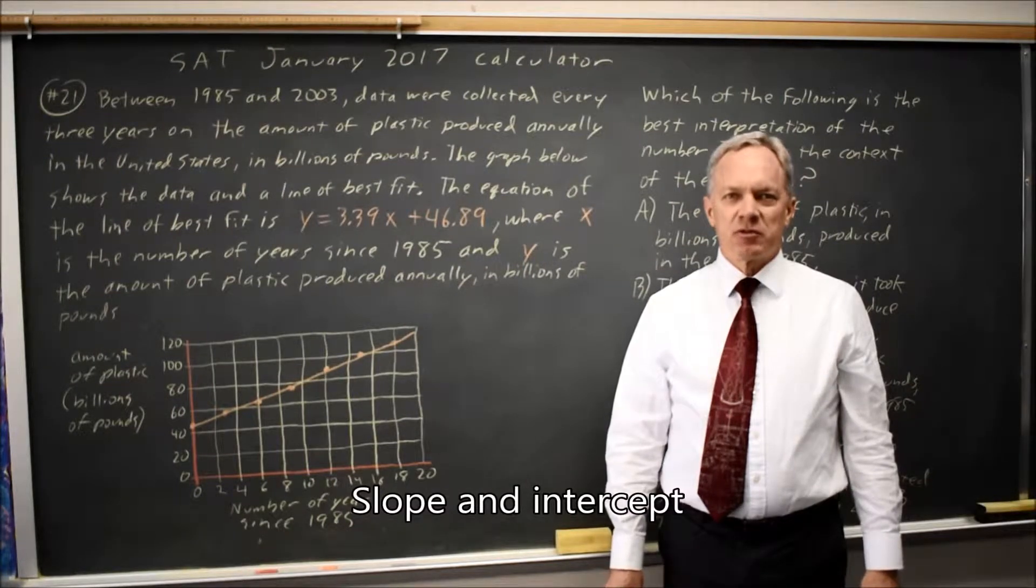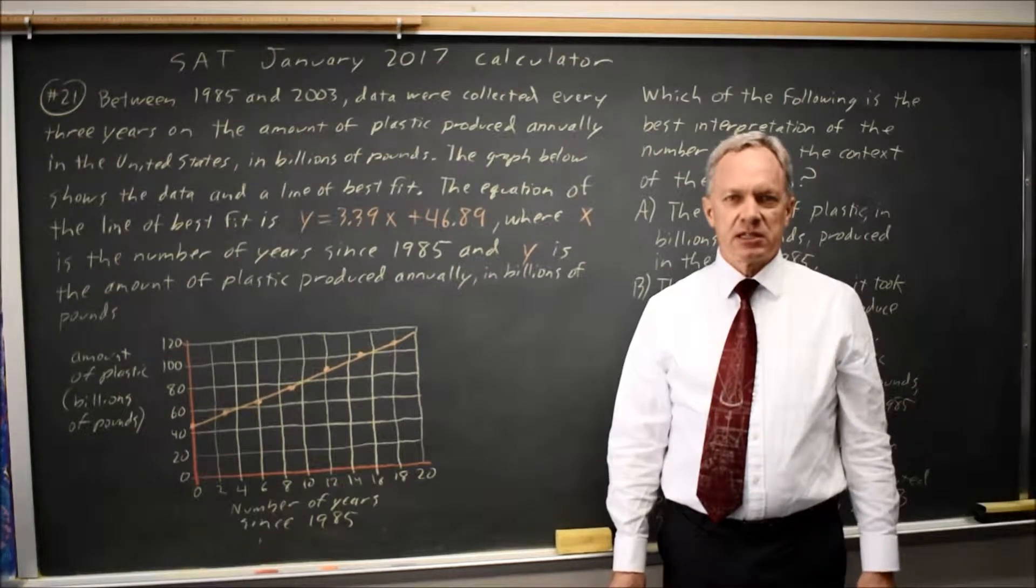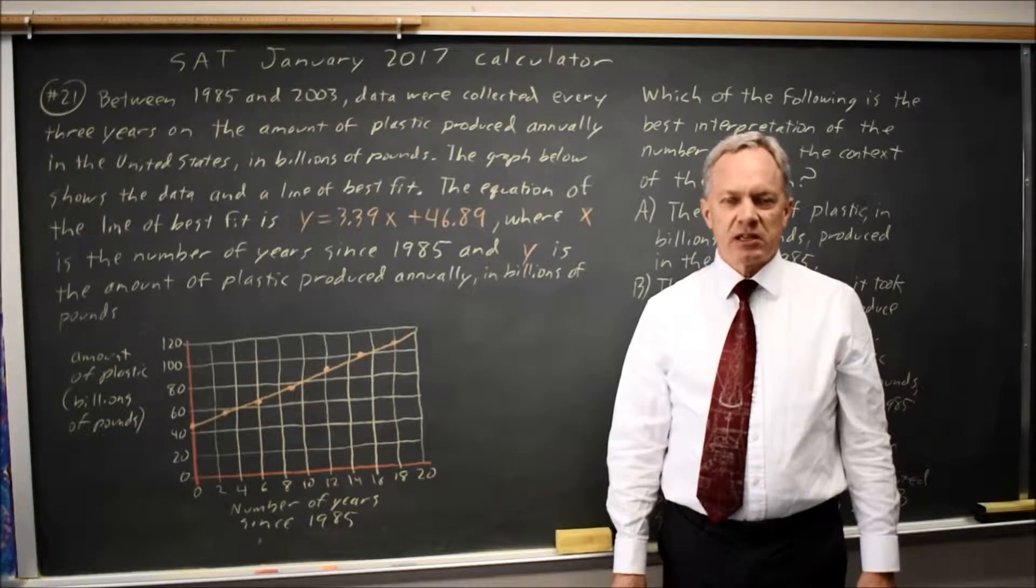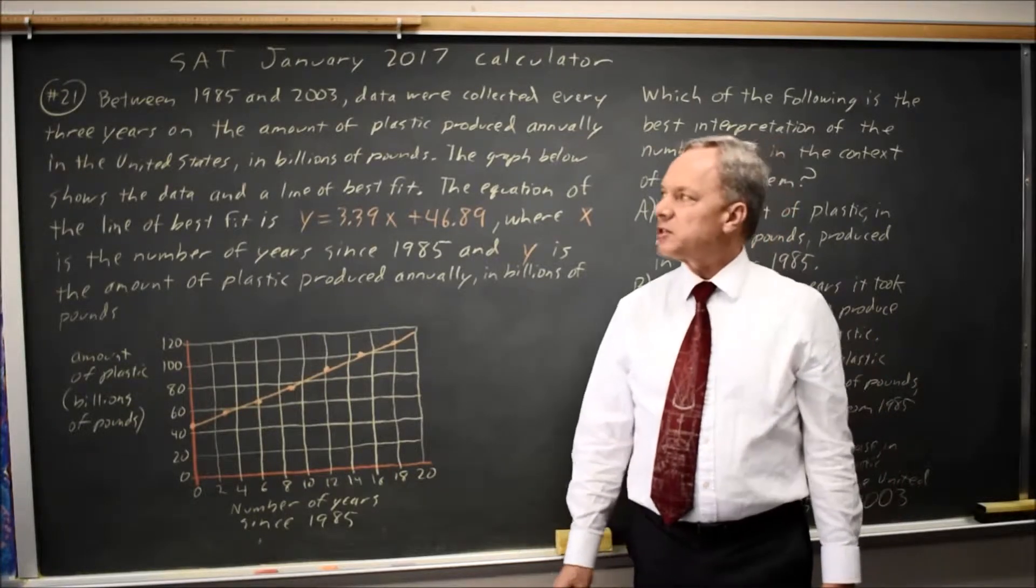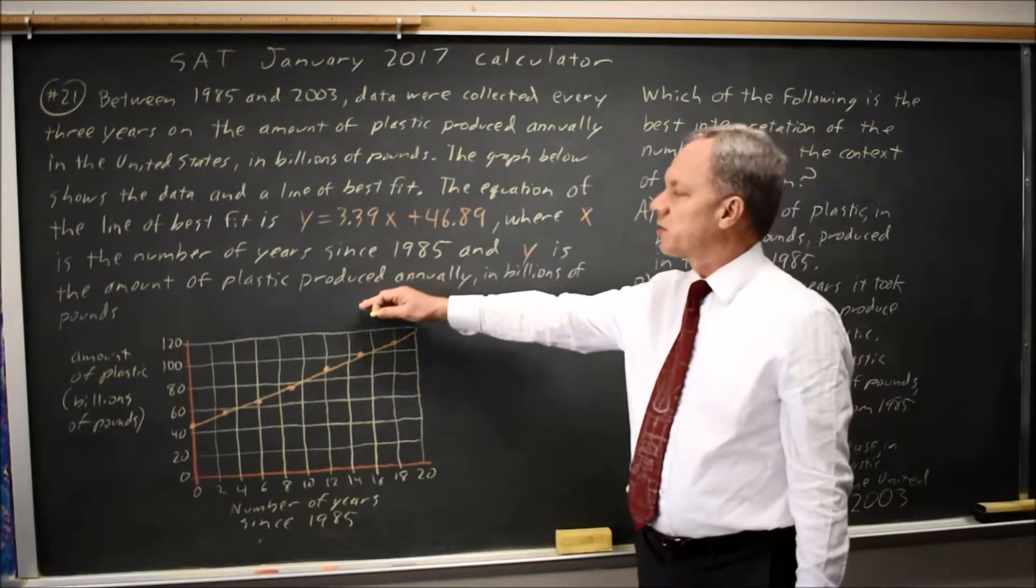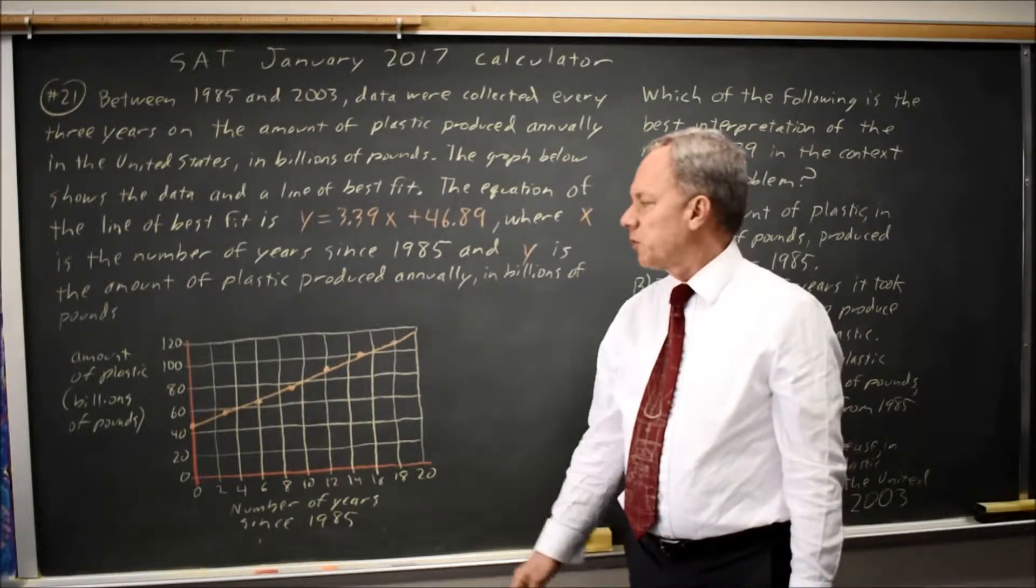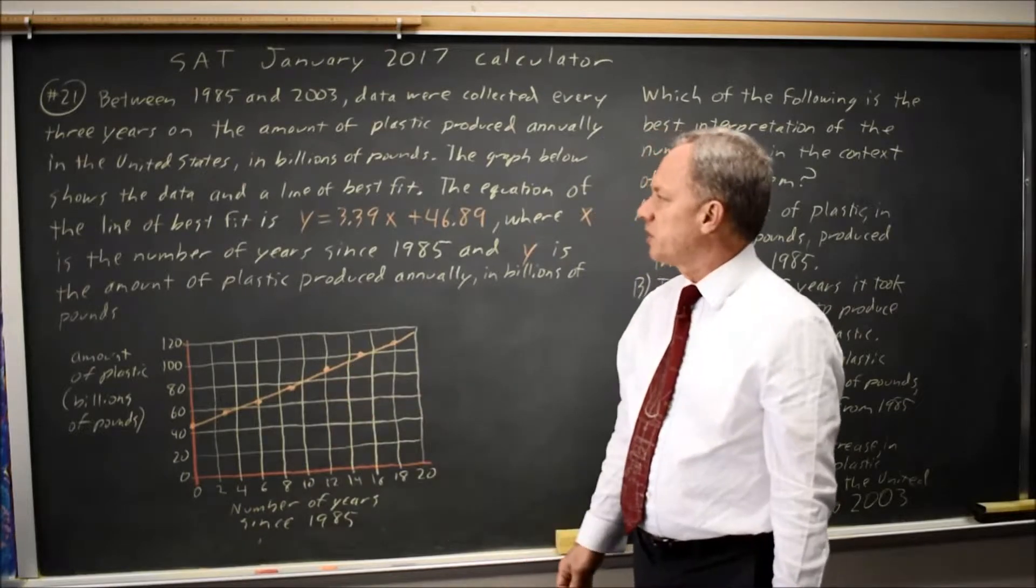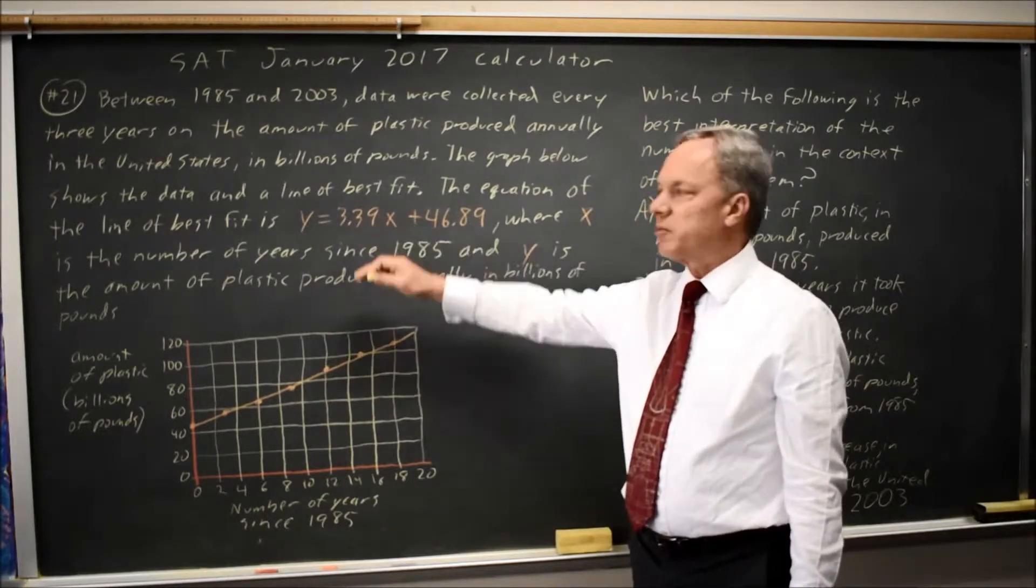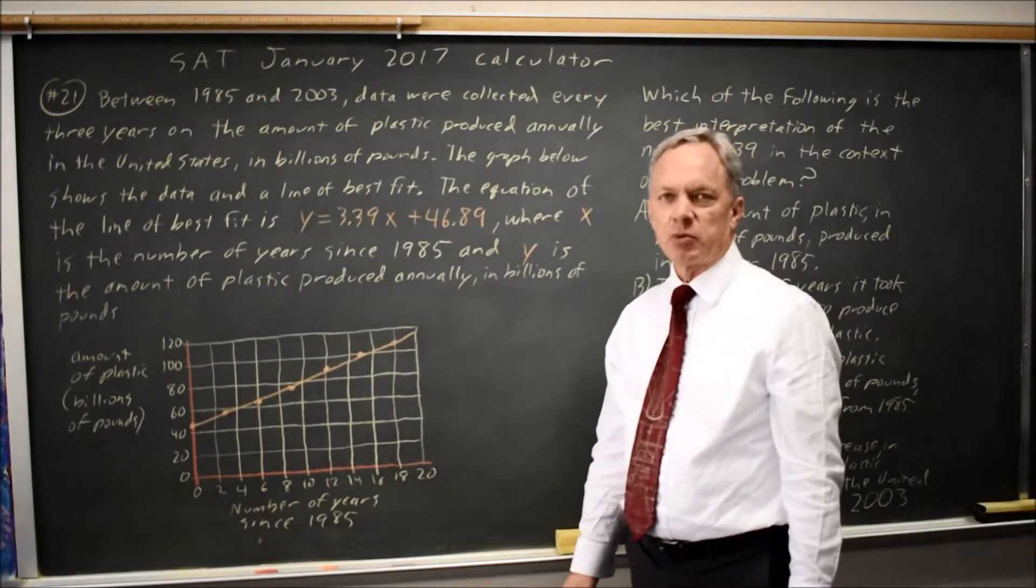This is calculator question number 21 from the January 2017 SAT, which is also practice test 8 from the 2018 version of the College Board prep book. College Board gives us an equation describing this graph where we have points and a line of best fit. The line of best fit is Y equals 3.39X plus 46.89.